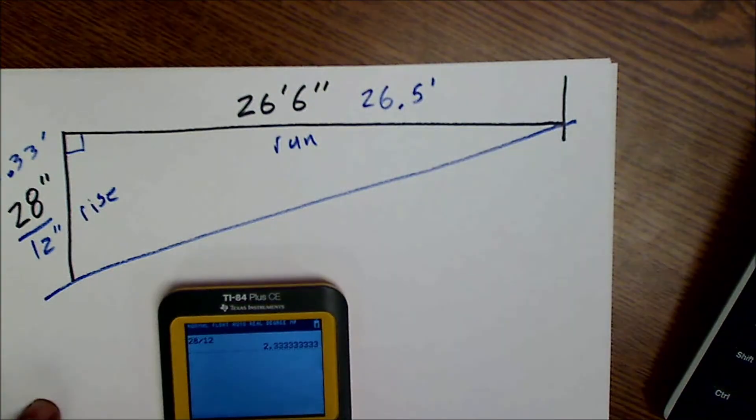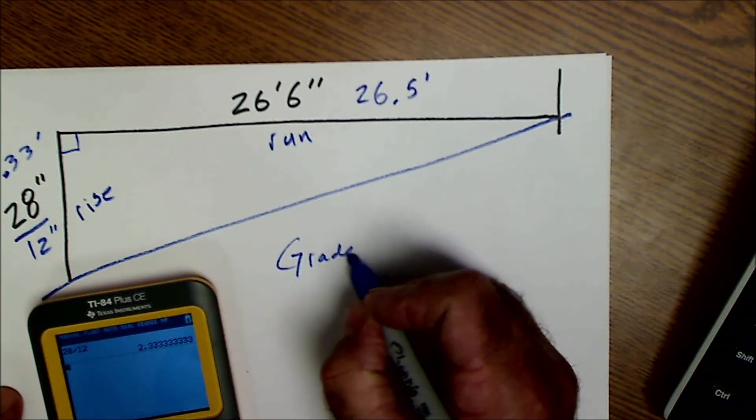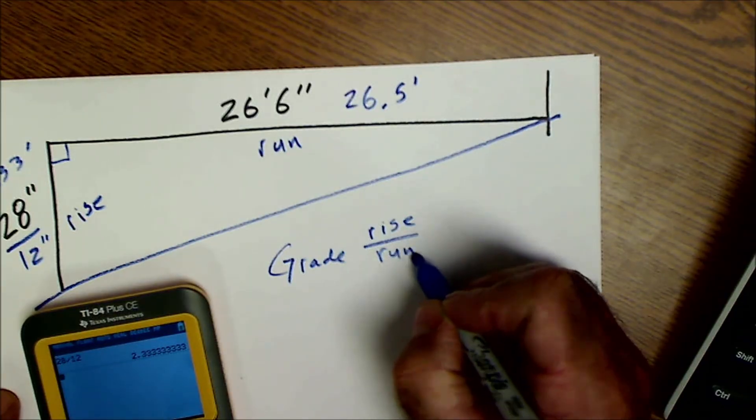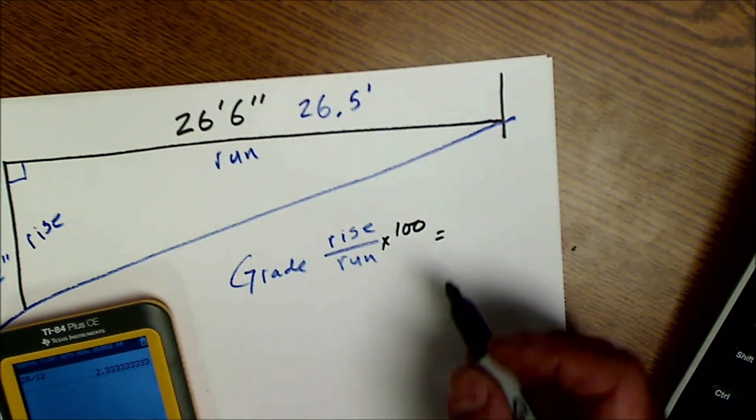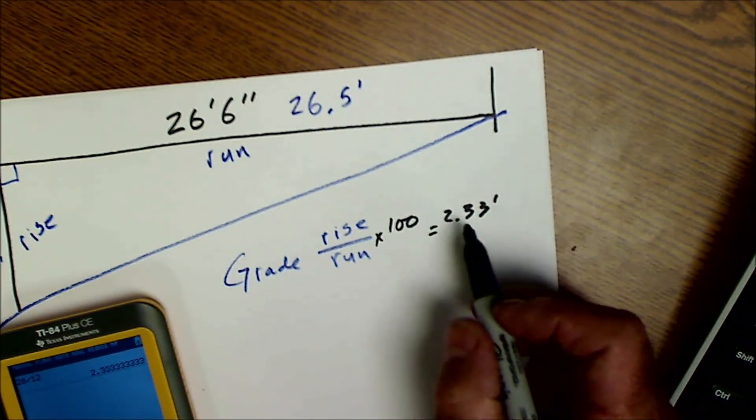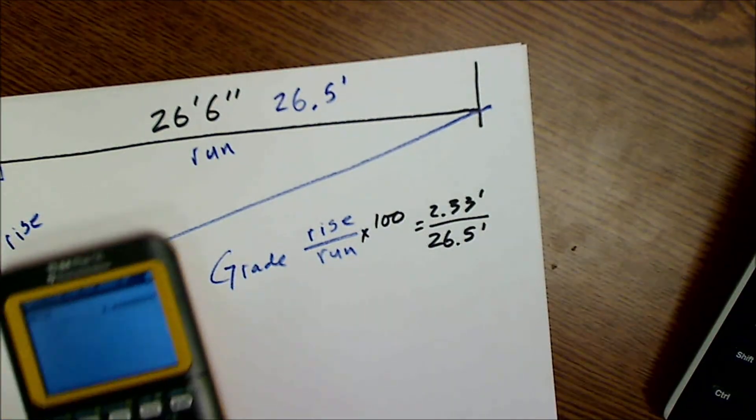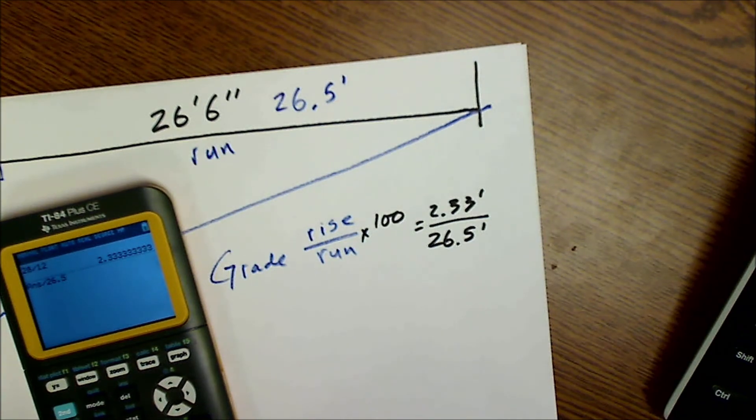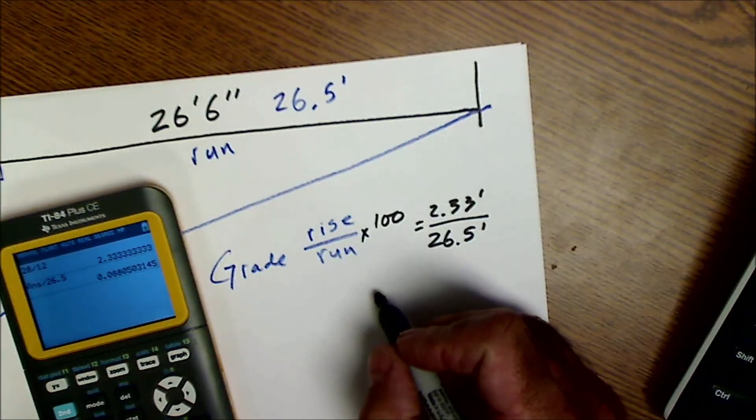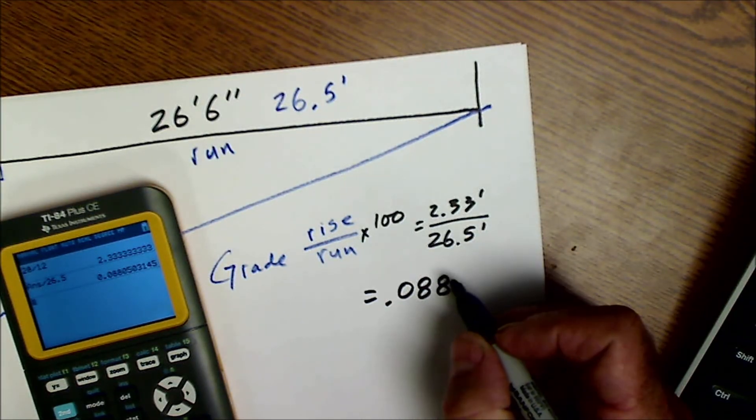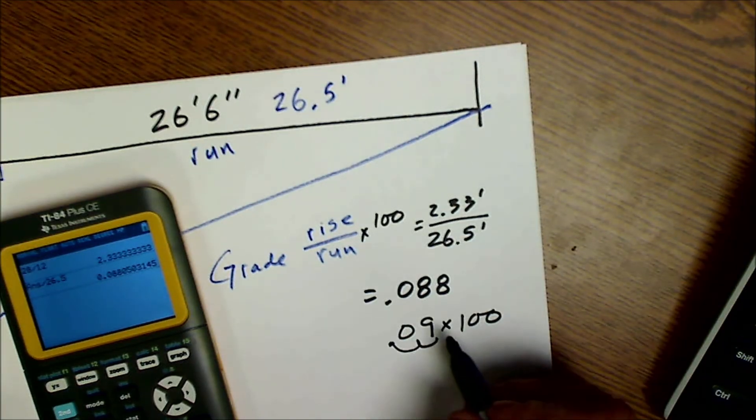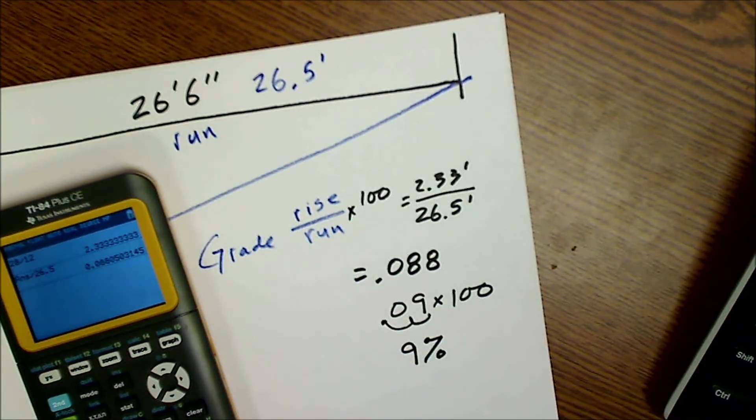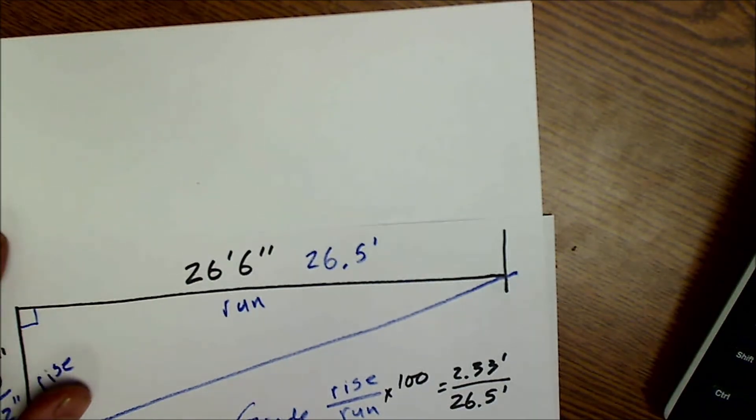If I want to figure out percent grade, the grade is just the amount of rise over the amount of run times 100. So that will give you a decimal, you're going to multiply that by 100 and that will give you a percent grade. So the rise is 2.33 feet, the run is 26.5 feet. I'm going to take that 2.33, divide it by the 26.5 feet and get 0.088. The answer is 0.0805. I'm going to just round that to 0.09, multiply it by 100, and that's a nine percent grade. That's how you figure out grade: it's the amount of rise divided by the amount of run times a hundred, and that's your percent grade.